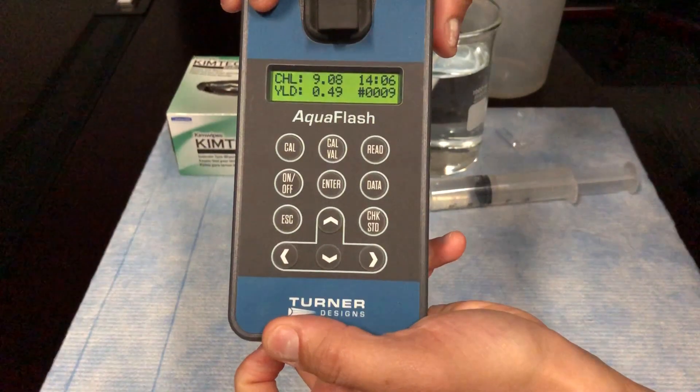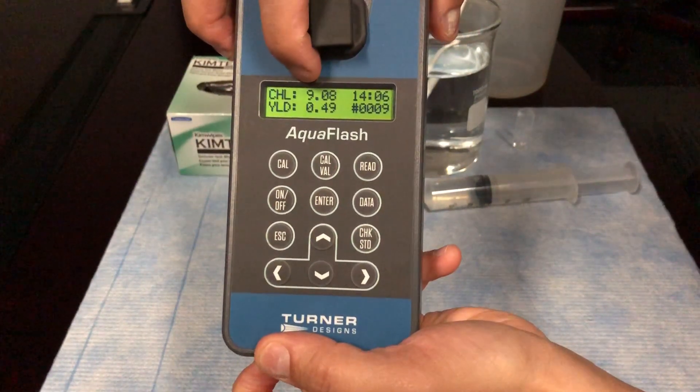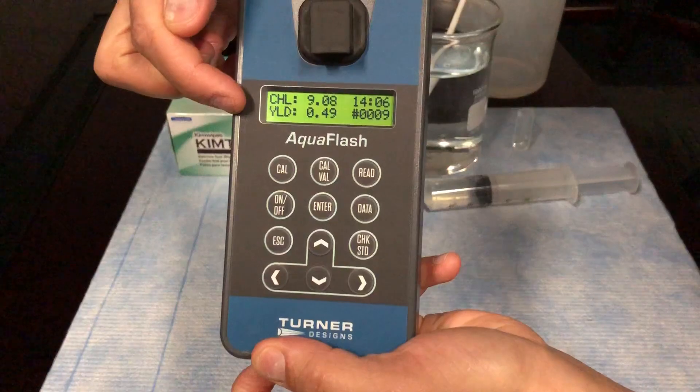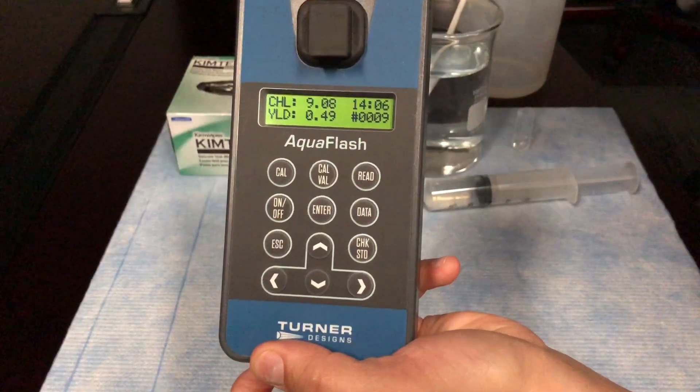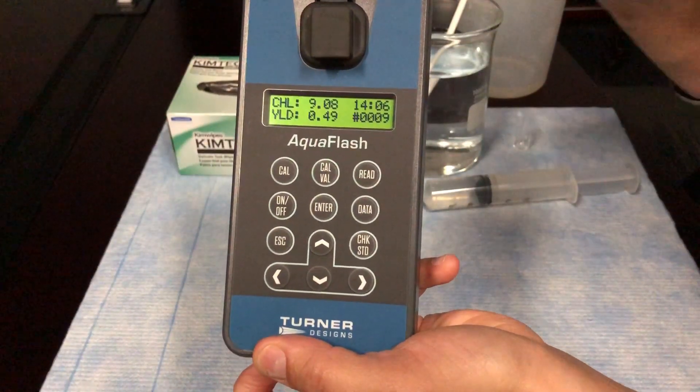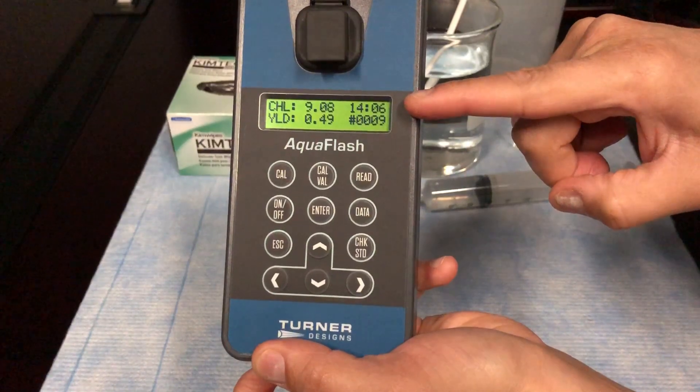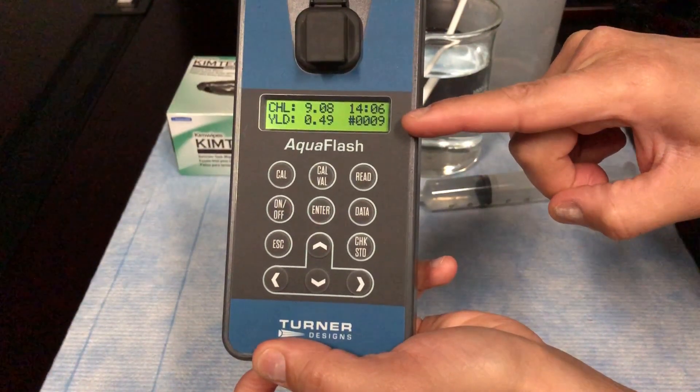The results are displayed on the screen as chlorophyll in microgram per liter concentrations and yield as a ratio from 0 to 1, indicating how healthy algae are. You also have the time and the sample number displayed on the screen.